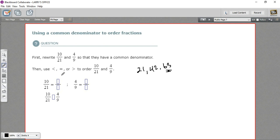This is also a multiple of 9. 9 times 7 is 63. So that's what I want to go for in my denominator. To get 63 as a denominator for 10 21sts, I'd need to multiply the top and the bottom by 3. And for 4 ninths, I would need to multiply the top and the bottom by 7.